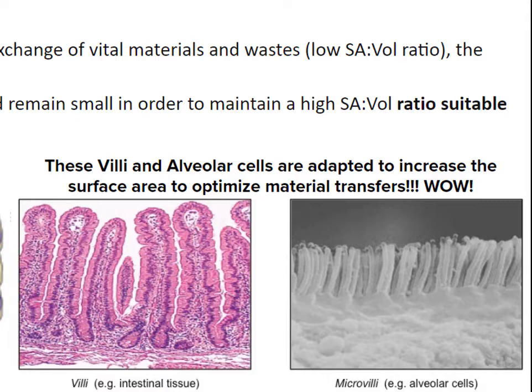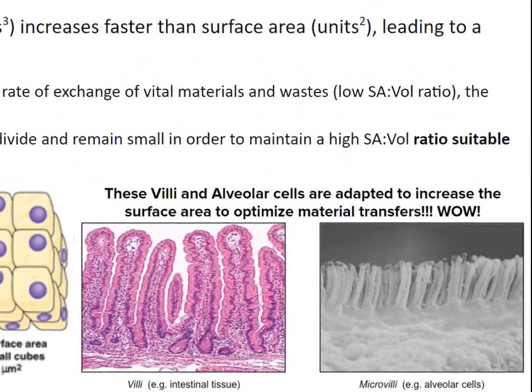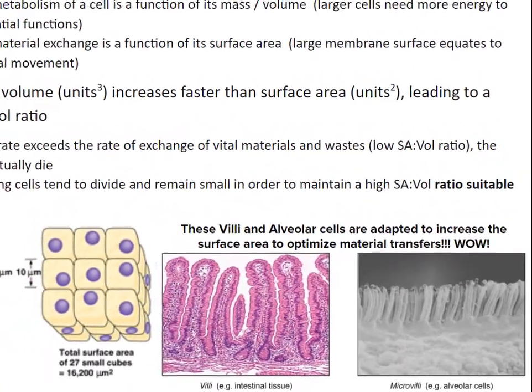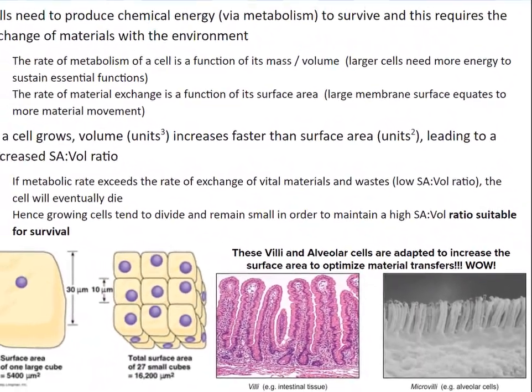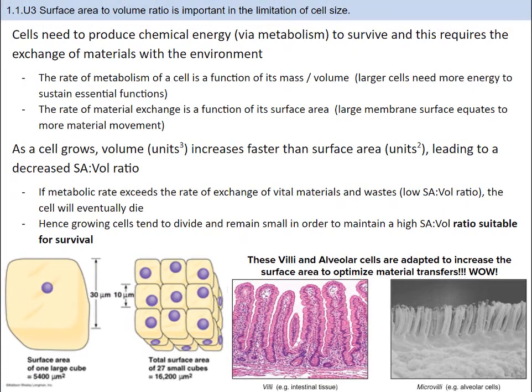You can see two specific examples: the villi in the small intestine and alveolar cells in the lungs. Both of these have bristle-like extensions called microvilli. Other adaptations include long extensions of the cell membrane in dendritic cells of the immune system, neuron cells, and epidermis cells in roots of plants. Some cells flatten themselves out to maximize the surface area — red blood cells, pneumocytes in the lungs, and epithelial cells in capillaries are adapted in this way.